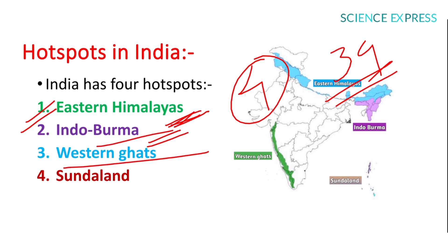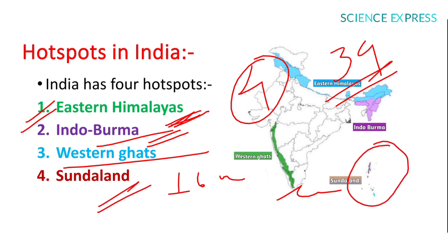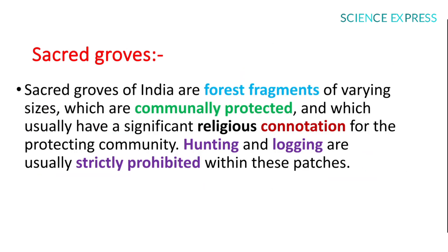The Western Ghats occur along the western coast of India for about 1600 km, covering Maharashtra, Karnataka, Tamil Nadu, and Kerala, extending over Sri Lanka. The fourth hotspot is Sundaland, located in the Andaman-Nicobar Islands.